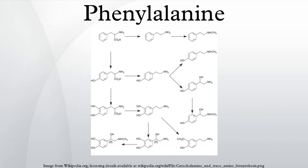The genetic codon for phenylalanine was first discovered by J. Heinrich Matthaei and Marshall W. Nirenberg in 1961. They showed that by using mRNA to insert multiple uracil repeats into the genome of the bacterium E. coli, they could cause the bacterium to produce a polypeptide consisting solely of repeated phenylalanine amino acids.